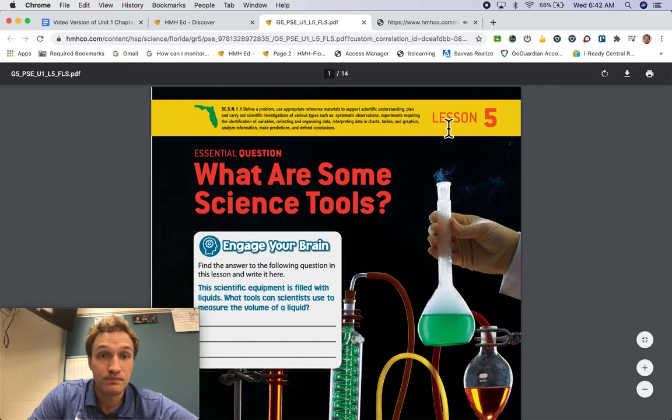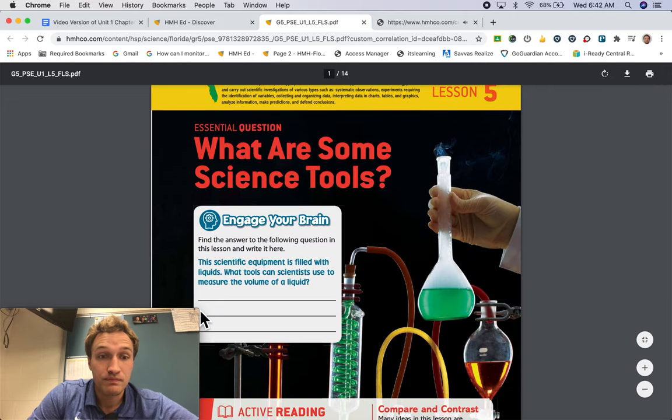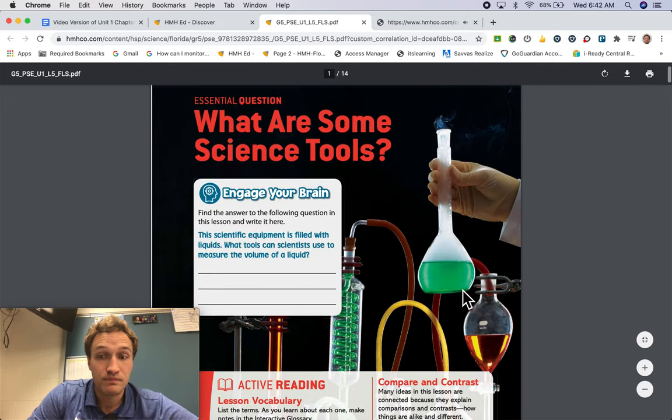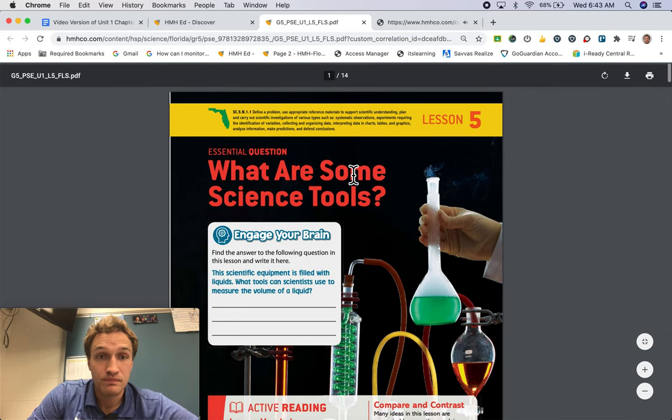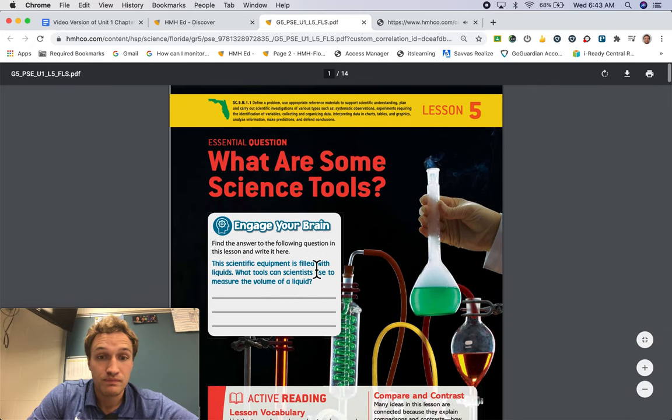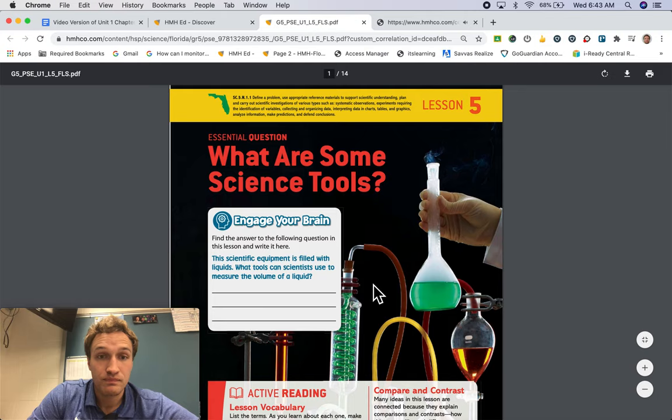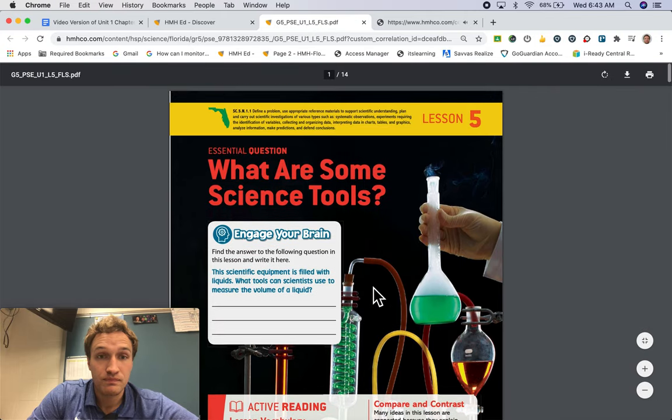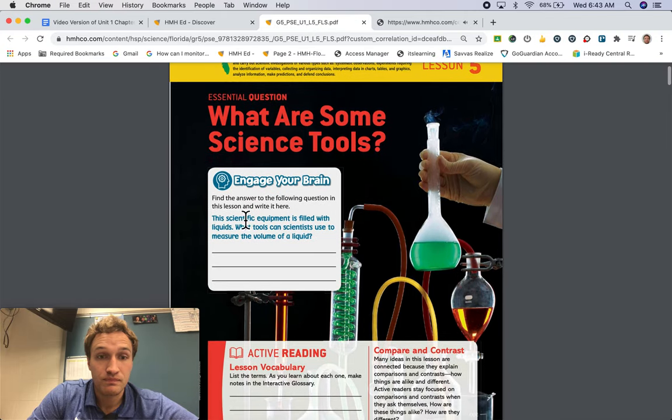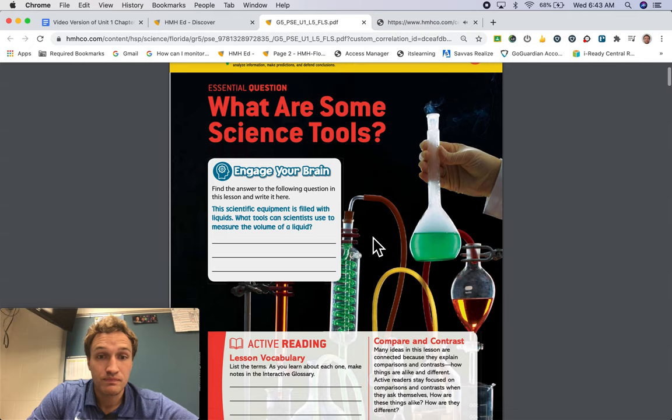Lesson 5. Essential Question. What are some science tools? Engage your brain. Find the answer to the following question in this lesson and write it here. This scientific equipment is filled with liquids. What tools can scientists use to measure the volume of a liquid?